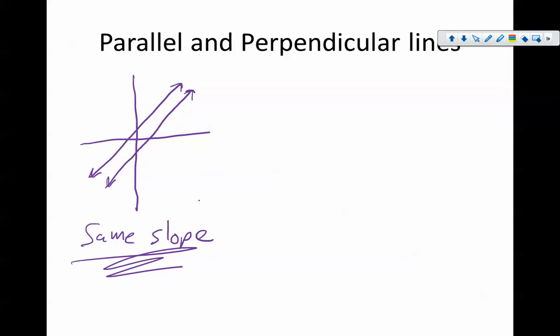So parallel lines have the same slope. If we know the slope of two lines and they are the same, they are parallel lines.